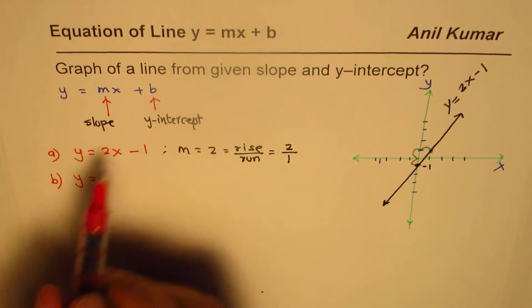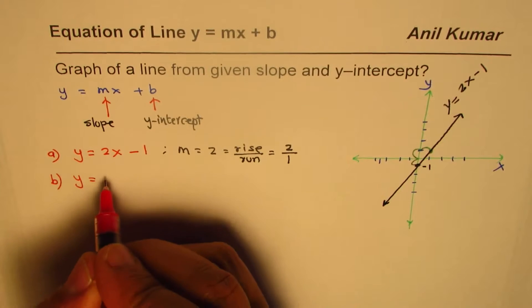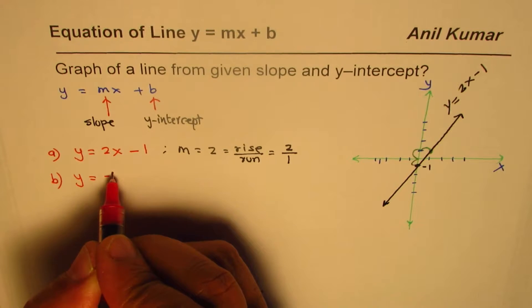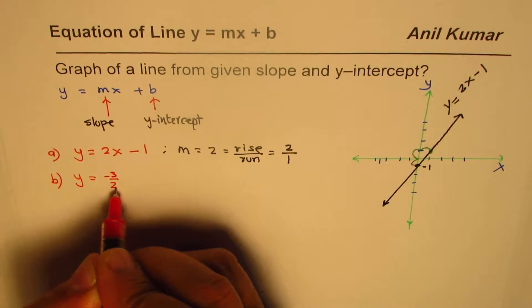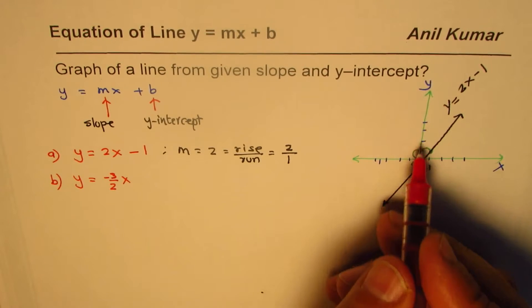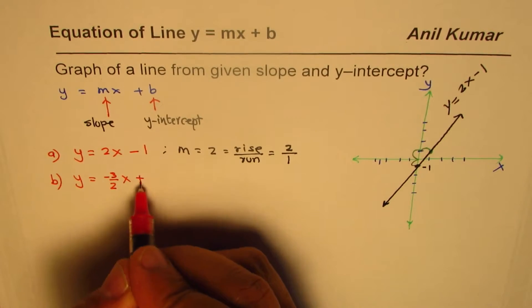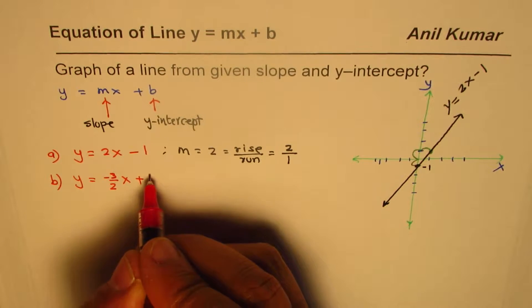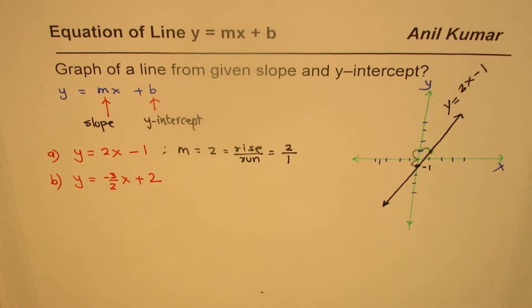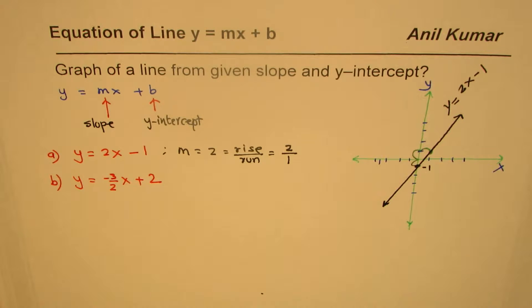Let me take another example with a negative slope expressed as a fraction. Example B: y = -3/2 x + 2. So we again start with the y-intercept.